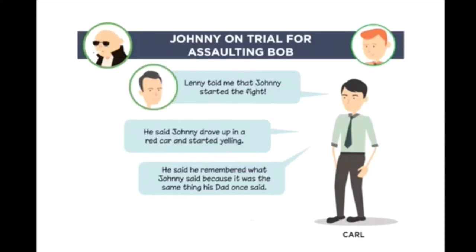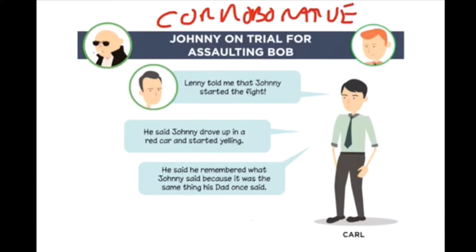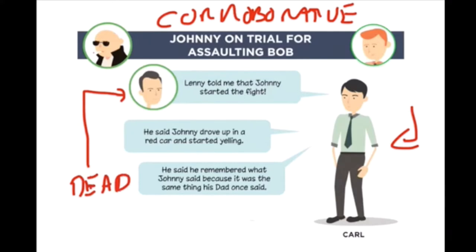Bradshaw is about what we call corroborative evidence, and when we're allowed to use it to help guarantee the reliability of a hearsay statement. The person we're concerned about is not Carl — Carl is available in court to be cross-examined. The problem is that Carl can only answer what he knows, and the person who really knows the details is Lenny, and Lenny's dead. So we look at things like: did Lenny have a motive to fabricate against Johnny? Is he just some innocent bystander? When did he make the statement — five minutes after it occurred, or three hours later? How detailed is the statement?